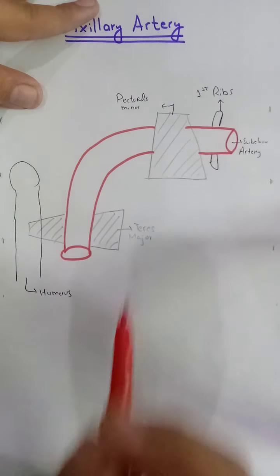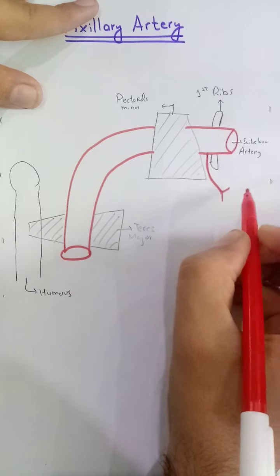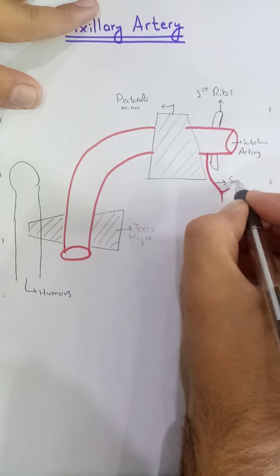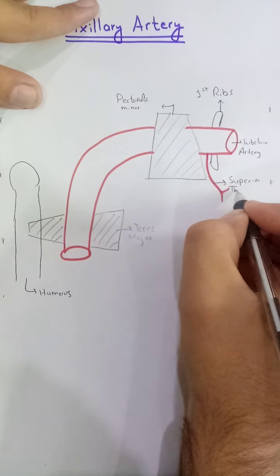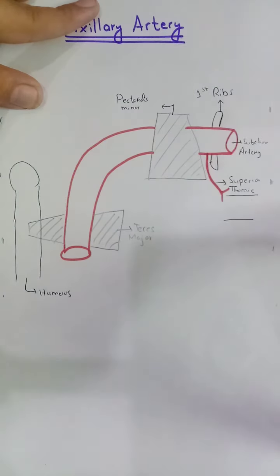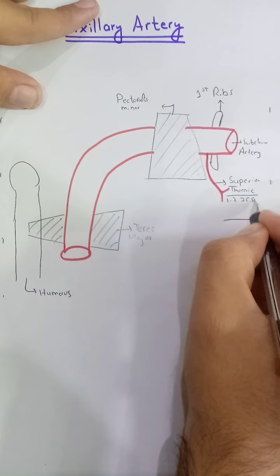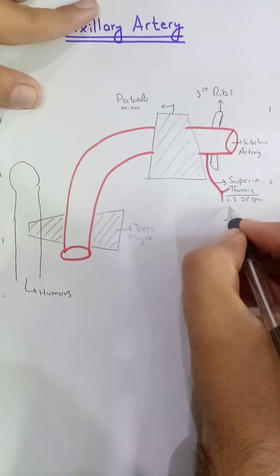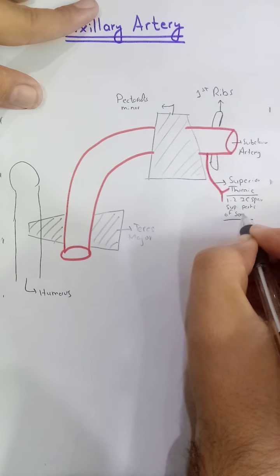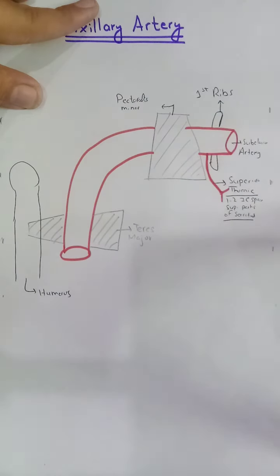Now we will see these branches one by one. The first part gives one branch: the superior thoracic artery. This superior thoracic artery supplies the first and second intercostal spaces and the superior part of the serratus anterior muscle.